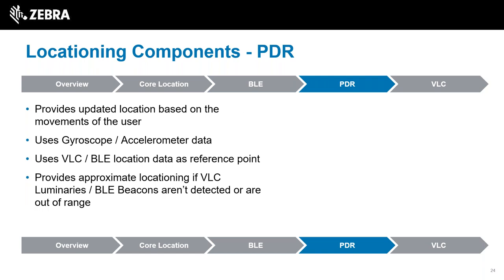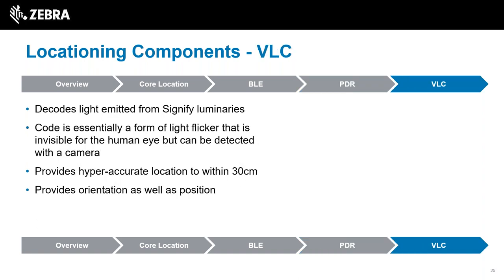Pedestrian dead reckoning uses the gyroscope and accelerometer on the device to approximate your location if it can't use either VLC or BLE. This will be quite rough and inaccurate, but it's just another method to ensure some location is available if all else fails. The main method - VLC - decodes the lights from the luminaries and is hyper accurate: it can locate you to within 30 centimetres accuracy and also provides your orientation, not just your position.